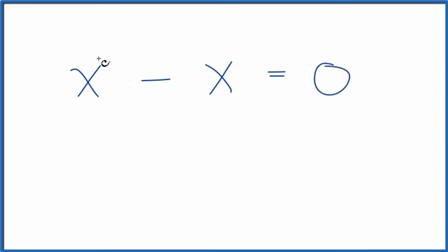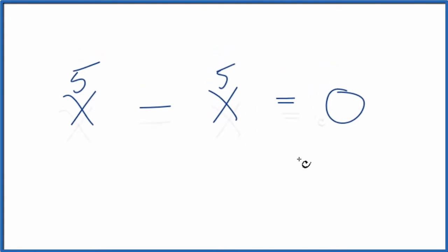And again, we could test this. Say x was 5. 5 minus 5, that's 0. So it's always good to put a number in and test if you're confused.